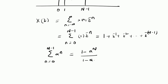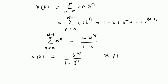Coming back to the Z transform, X of Z will be equal to 1 minus — and alpha is clearly equal to Z power minus 1 — so 1 minus Z power minus N divided by 1 minus Z power minus 1. This is valid only for values of Z not equal to 1. For Z equal to 1, we can directly substitute Z equal to 1 in the summation, so X of Z will be equal to 1 plus 1 plus 1 plus 1, up to N times. So we have the summation equal to N for Z equal to 1.